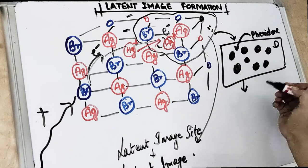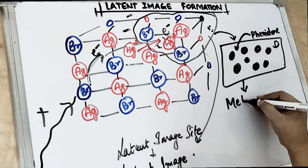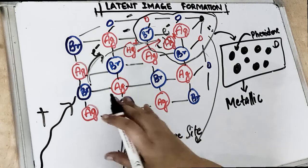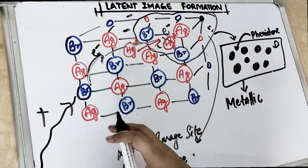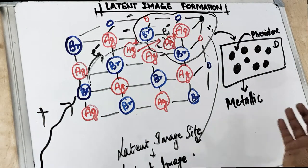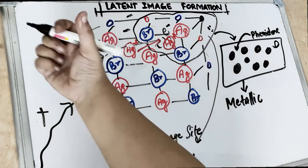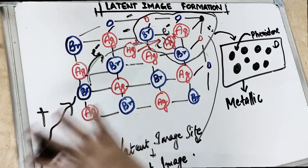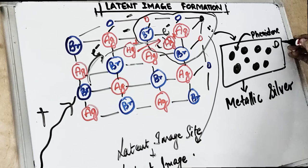All of the latent image grains are now converted into metallic silver. One interesting fact — people sell the used developer solution because they can take out metallic silver from it. This is the reason: the silver halide grains which were initially present are now converted into metallic silver in the developer solution.